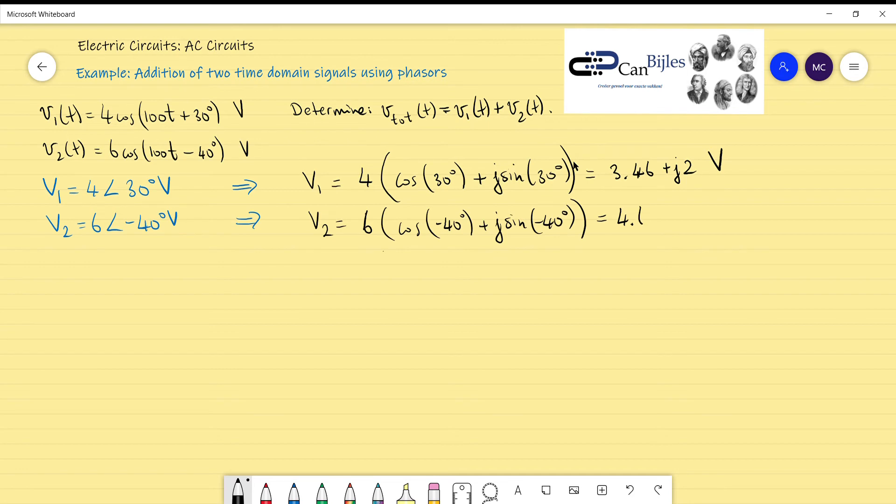Now we have the rectangular representation for V1 and V2. What we want is V_total, so V_total is V1 plus V2. What we can do is if you write it down next to each other like this...